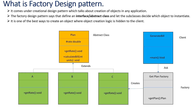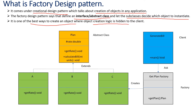So what is a factory design pattern? A factory design pattern is a creational design pattern which talks about the creation of objects in any application. It says: define an interface or abstract class and let the subclasses decide which object to be instantiated. It is one of the best ways to create an object where the object creation logic is hidden to the client.